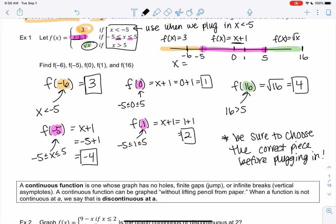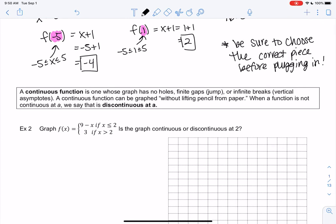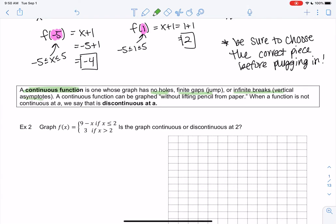So let's do one more example in this video. We like the word continuity. Are things continuous or not? So a continuous function is a function whose graph has no holes, has no finite gaps. So that might be like the graph jumping to another piece or infinite breaks, which you might remember as asymptotes. But the idea is basically you can draw this graph without lifting your pencil from paper. So if you have to pick up your pencil to draw, it's probably not continuous. And so when something is not continuous, we call it discontinuous, and we say it's discontinuous at A.